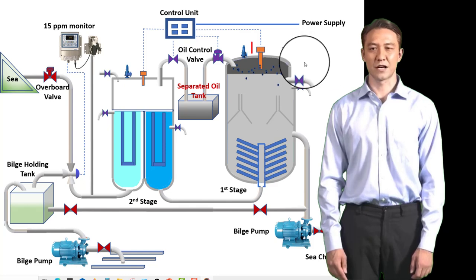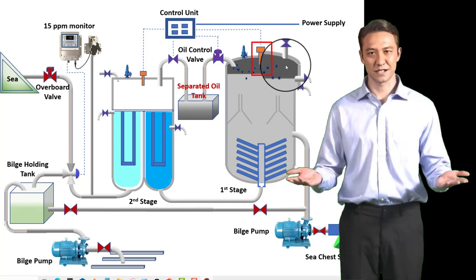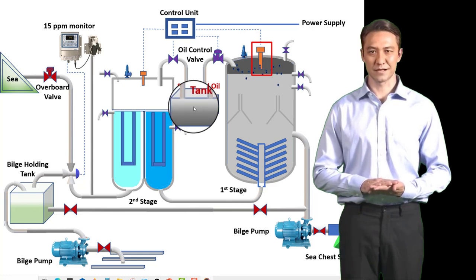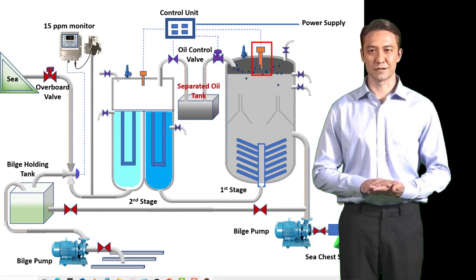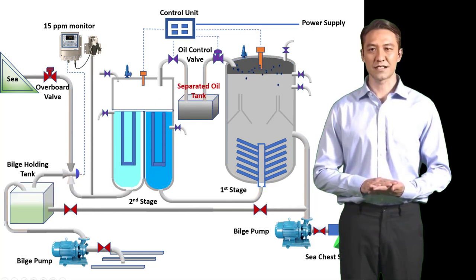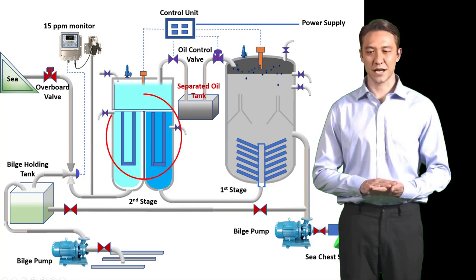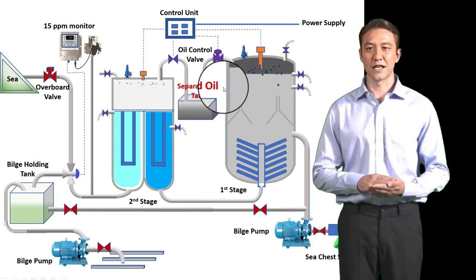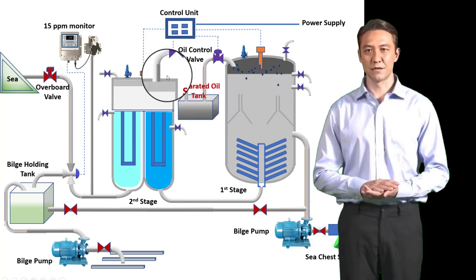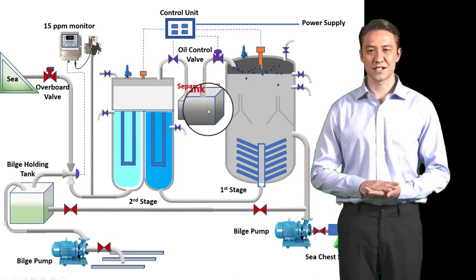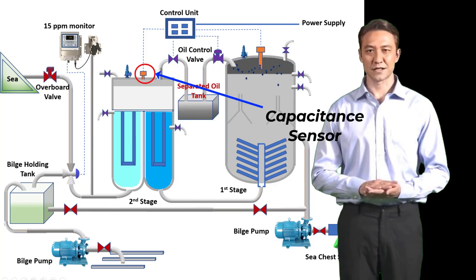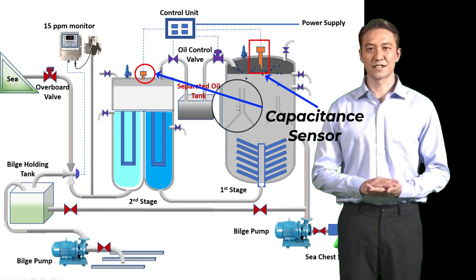At this point, oil accumulated at the top is monitored by a sensor and automatically sent to the oil tank through the overboard valve. Water that has been separated goes to the second stage via a coalescer filter, which further extracts any mixture still remaining in the water from the first stage. In the top of the chamber of the second stage, lighter densities are removed and likewise automatically sent to the oil tank using a capacitance sensor, which is also fitted on the first stage.